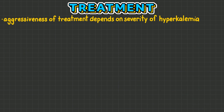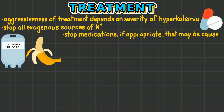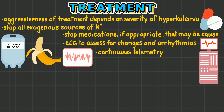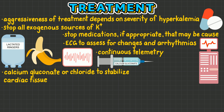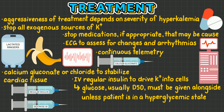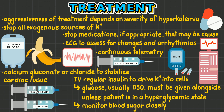The aggressiveness of treatment of hyperkalemia depends on the severity. It includes stopping all exogenous sources of potassium and medications, if appropriate, that may be causing hyperkalemia. Treatment usually includes an ECG to assess for changes and arrhythmias, with the possibility of continuous telemetry. Intravenous calcium gluconate or chloride may be ordered to stabilize cardiac tissue. Regular insulin can be given intravenously to drive potassium into cells; however, intravenous glucose such as dextrose 50 should be given alongside — unless the patient is in a hyperglycemic state — to prevent hypoglycemia. It is important to closely monitor blood sugar with this treatment.